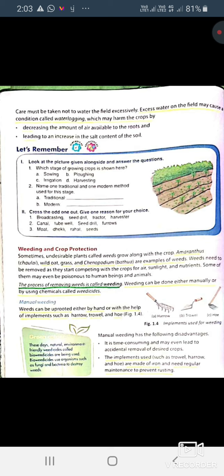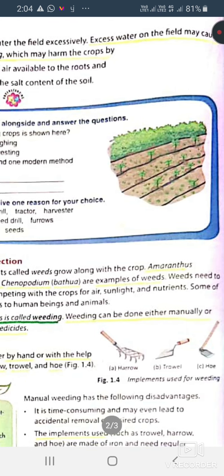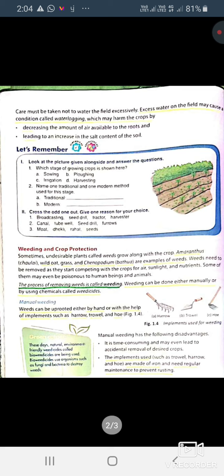Weeds can be uprooted either by hand or with the help of implements called harrow, trowel, and hoe. Manual weeding is the method through which human beings do this by hand using implements. But there are some disadvantages. It is a time consuming process and sometimes when human beings remove undesirable plants, some desired plants also get cut with the undesirable plants.